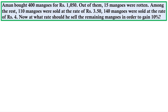Aman bought 400 mangoes for rupees 1050. Out of them, 15 mangoes were rotten. Among the rest, 110 mangoes were sold at the rate of rupees 3.50, and 140 mangoes were sold at the rate of rupees 4. Now, at what rate should he sell the remaining mangoes in order to gain 10%?